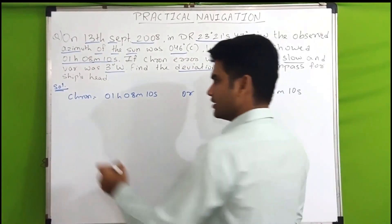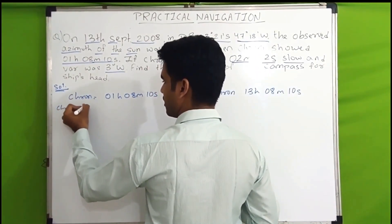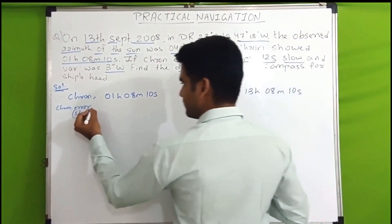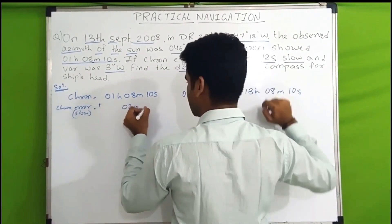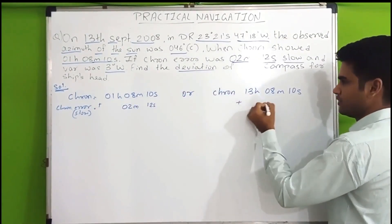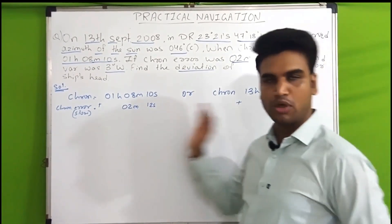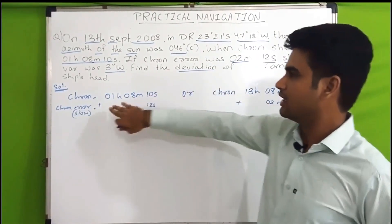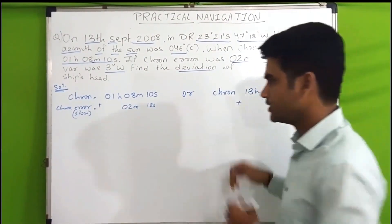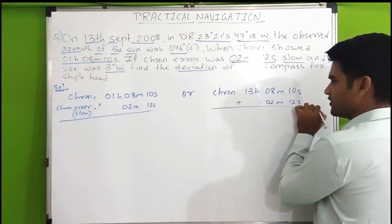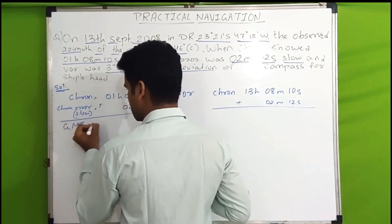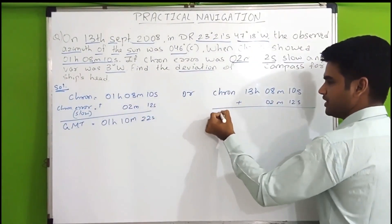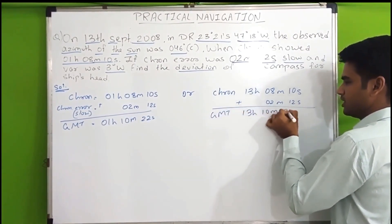Now we will apply the chronometer error. The chronometer error is slow, so whenever the error is slow you add it to the chronometer reading. We add 2 minutes 12 seconds to both conditions. For the 01h assumption, GMT becomes 01h 10m 22s. For the 13h assumption, GMT becomes 13h 10m 22s.